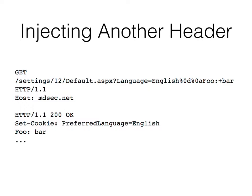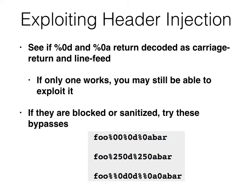That would add another parameter called foo with value bar. So if you want to exploit this, you want to see if %0D and %0A come back as characters during the line feed. And if they're sanitized, you can vary them — double them, or add %25 for the percent — and that will bypass certain cases.